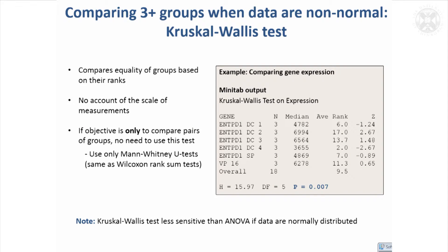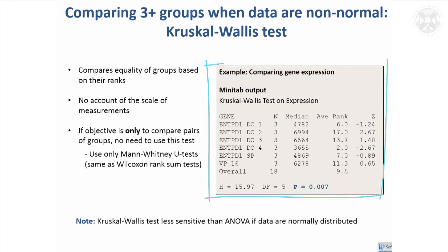This was about comparing three or more groups. If you check the residuals and find the data are non-normal, you'll want to do a non-parametric test. This odd-sounding test called the Kruskal-Wallis test is basically equivalent to ANOVA, except it works with the ranks of the data. It takes no account of the scale of the measurements — that's what all non-parametric tests do.